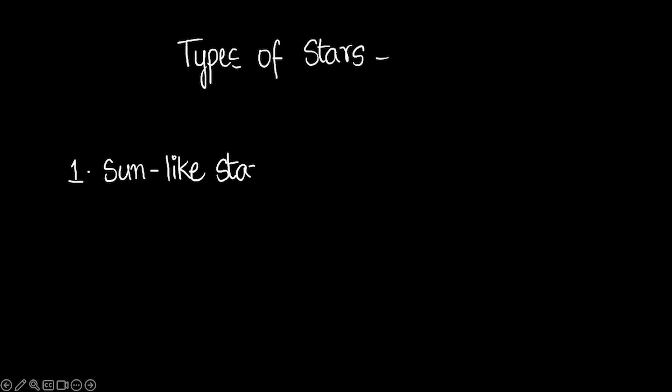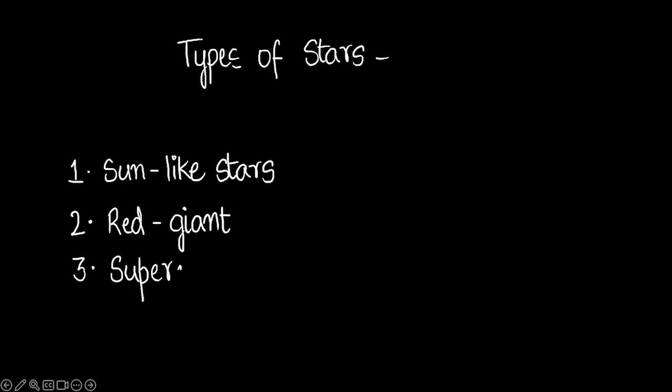We'll discuss a few types of stars — there are many more. The first type is Sun-like stars, the second type is red giants, and the third type is a supernova. All three are experienced at different stages of a star's life. Not every star necessarily becomes a red giant or a supernova, but it's something commonly experienced by stars.